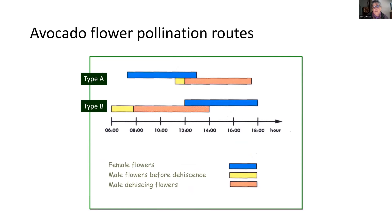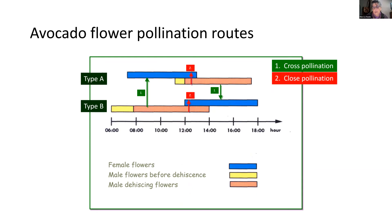There are many different ways pollen can reach the stigma of a female phase flower. This slide from Gadi Sham shows cross pollination, where pollen moves from the B flower type to the A flower type in the morning and the reverse in the afternoon. Close pollination is when pollen is transferred from a flower on the same tree, another tree of the same variety in the grove — this is what people often mean when they talk about 'overlap' of flowering on their Hass trees.